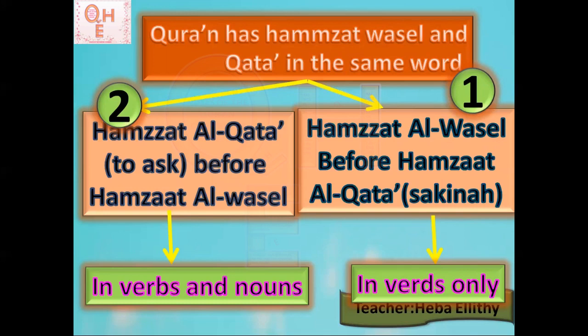We will go through number one — Hamzat al-Wassl before Hamzat al-Qata — and see it in verbs. Then we will go through Hamzat al-Qata when used to ask a question, coming before Hamzat al-Wassl in verbs first, and then we will see it in the nouns. Let's go together and see it, insha'Allah.